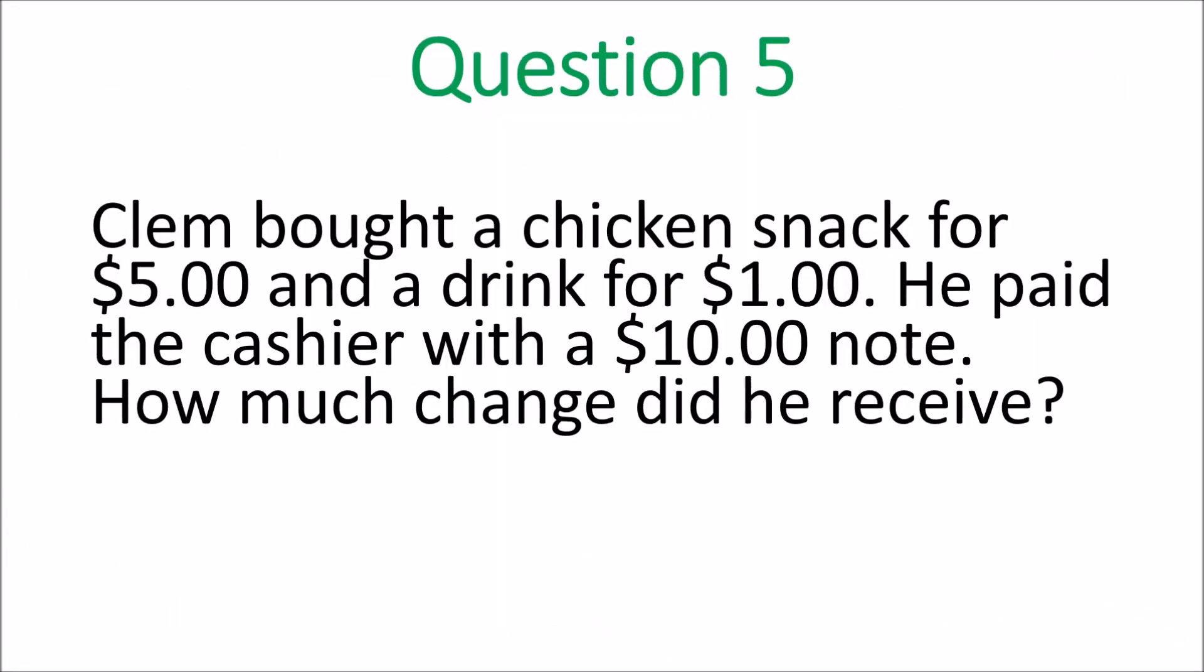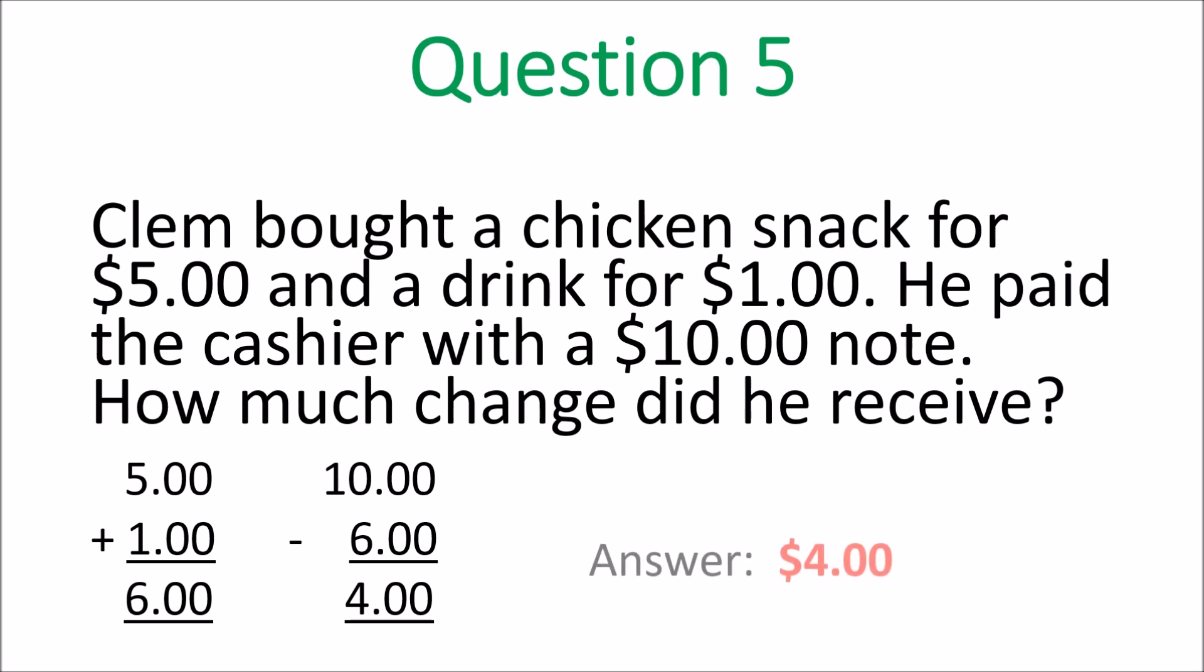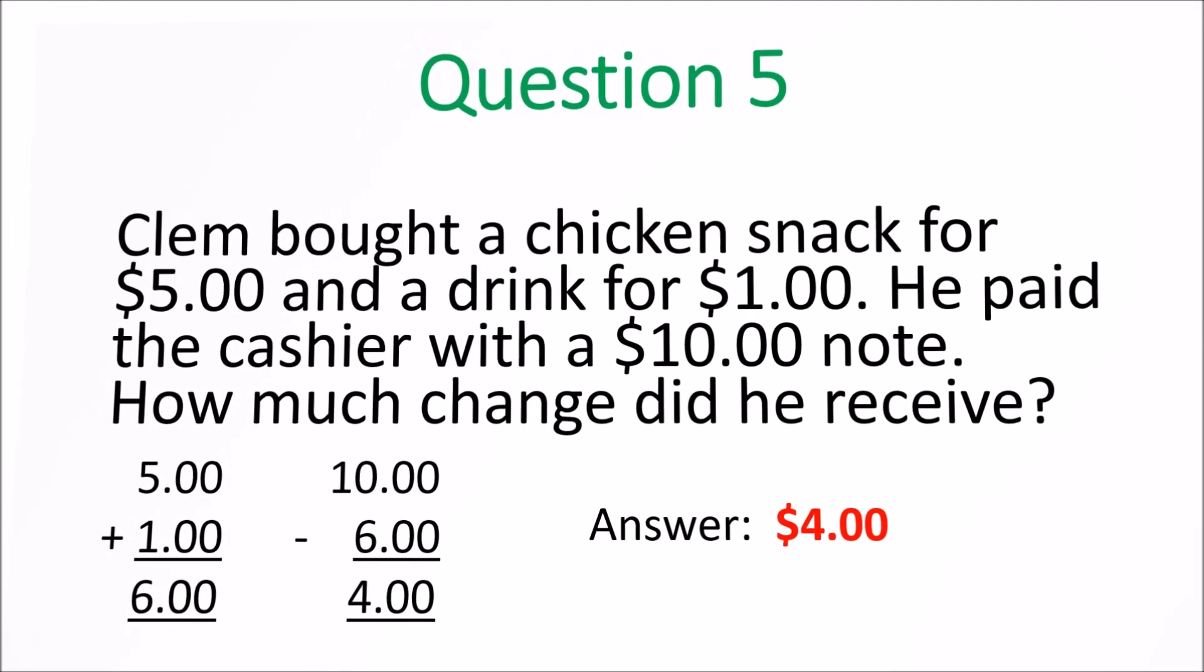Question 5. Clem bought a chicken snack for $5 and a drink for $1. He paid the cashier with a $10 note. How much change did he receive? So you add the $5 and the $1. You get $6. That's what you do first. Then you subtract it from $10 and you get $4. You can just count on to get the answer from 6. Answer is $4. But if you subtract, you will need to know how to rename.